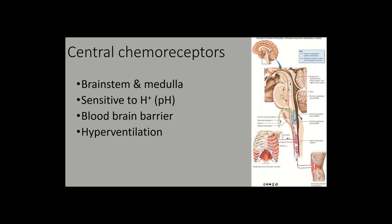The most important receptors that detect CO2, pH, or oxygen are in the brain stem — specifically in the front portion of the medulla — and they are called the central chemoreceptors. The central chemoreceptors are in the medulla, they are sensitive to pH, and what they are really sampling is the cerebrospinal fluid (CSF).